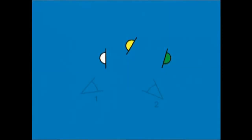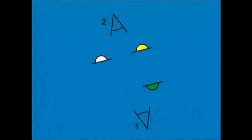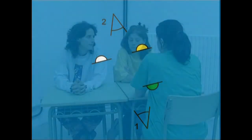Lerro berean dauden iru aktore filmatzeko beste modu bat ikusten ari gara. Kamera beste muturreko kokaguneetan jarri dugu. Lerro berean dauden iru aktoreak ele bat osatzen dutenean, kamera ikusten ari zareten kokaguneetan jarriko dugu eta haietatik hartutako planoak hauexek dira.